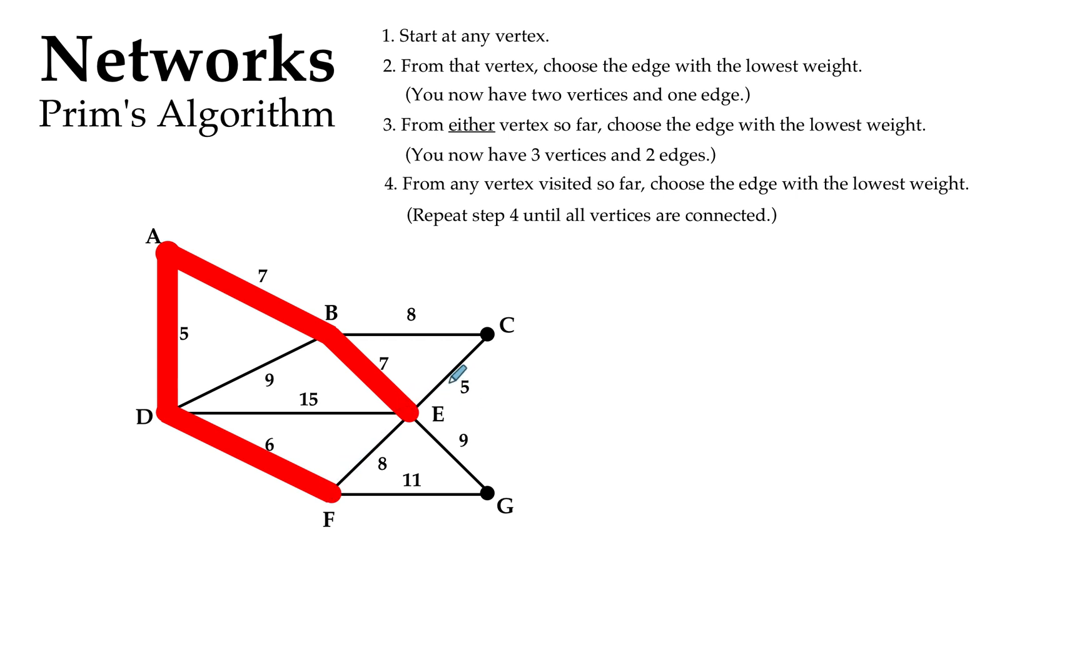So, of the vertices that are still to go, and from anywhere on my red diagram, what's my shortest edge, my lowest edge? I have 11, I have 9, I have 5, and I have 8. I think the 5 is the winner. So let's head that way.